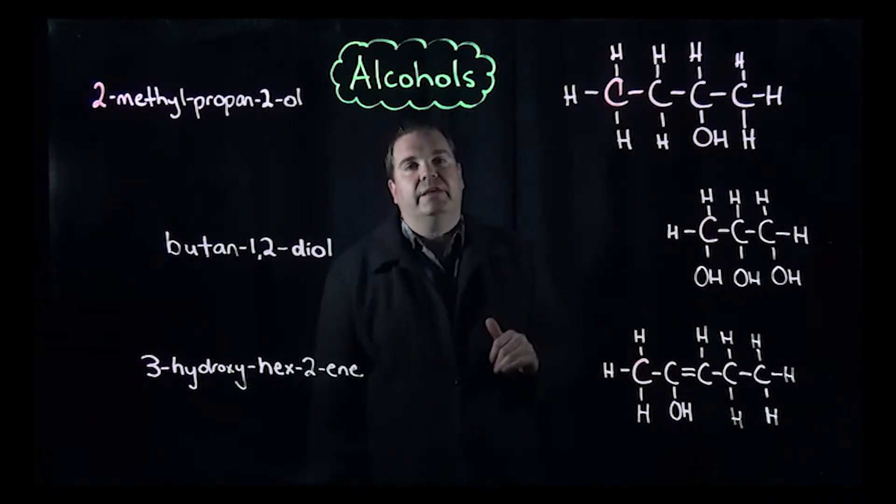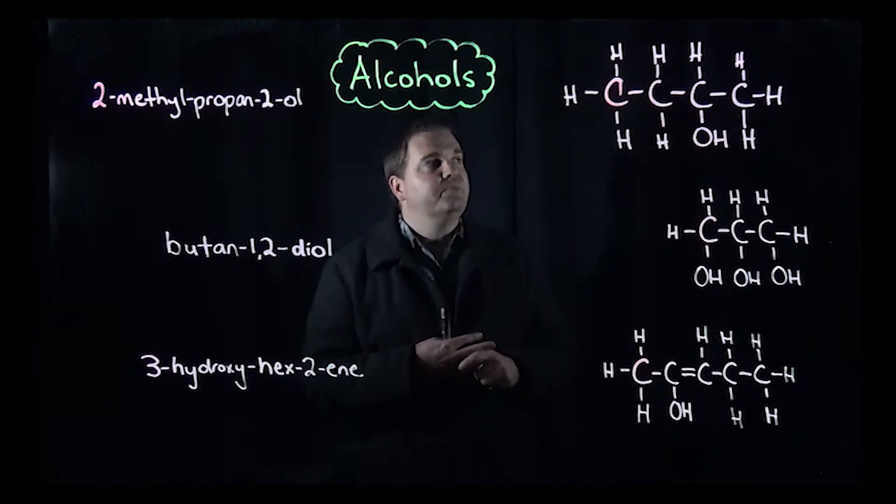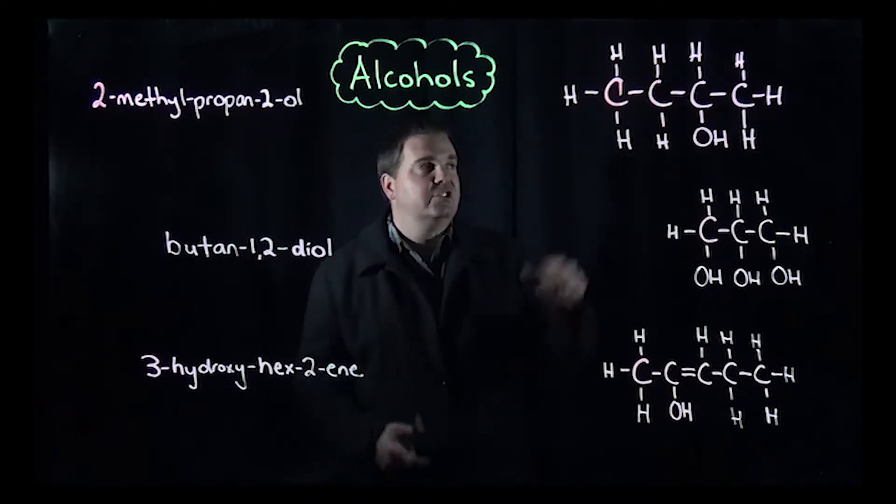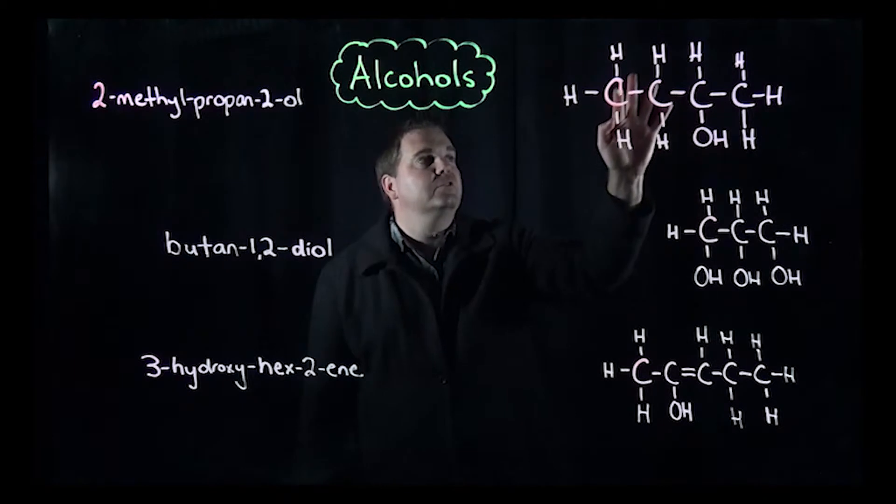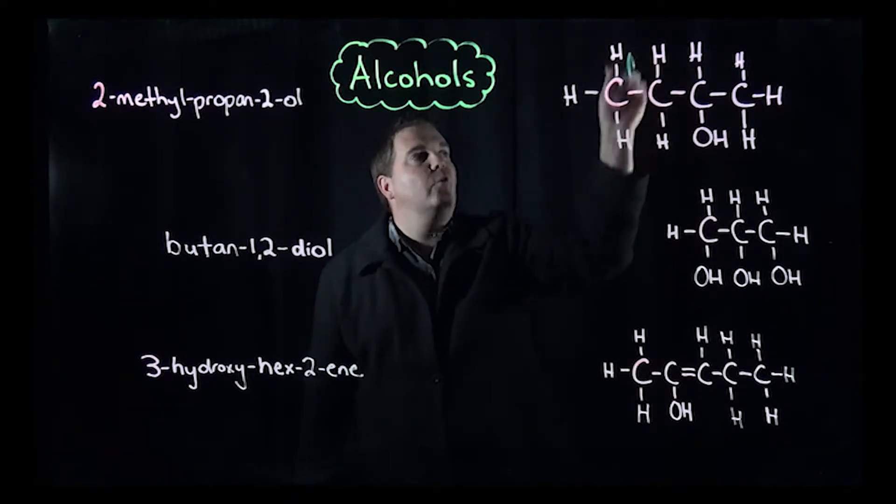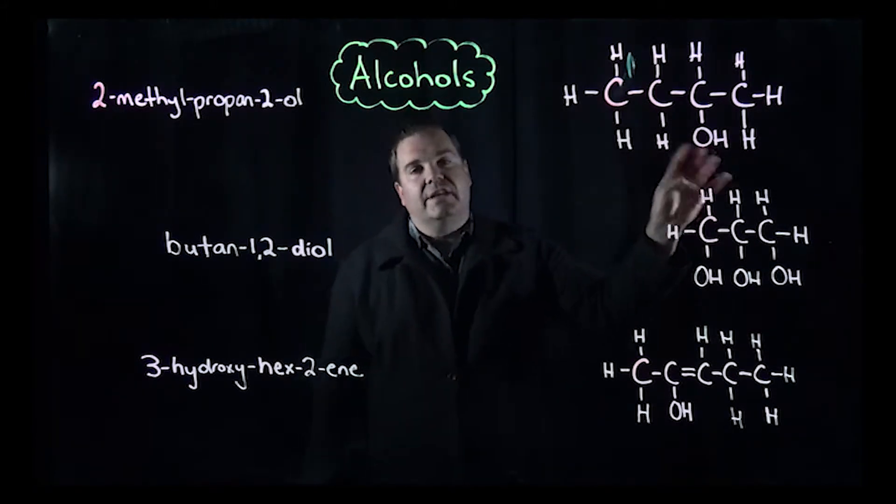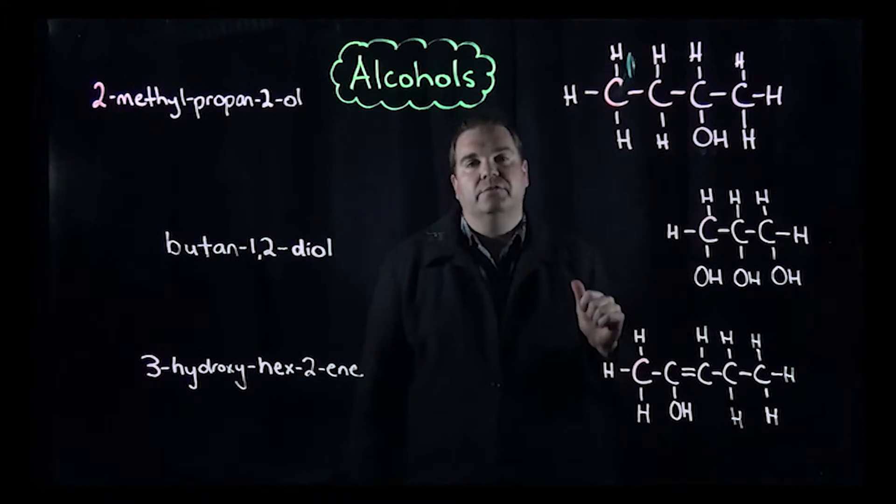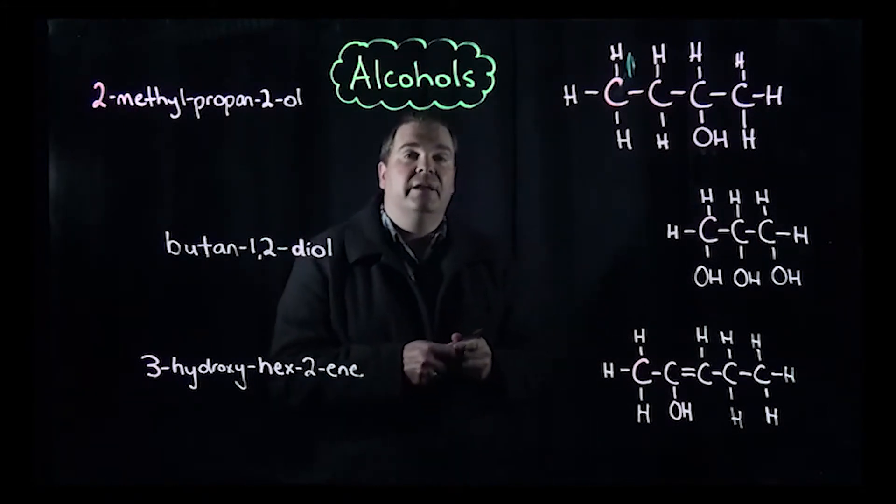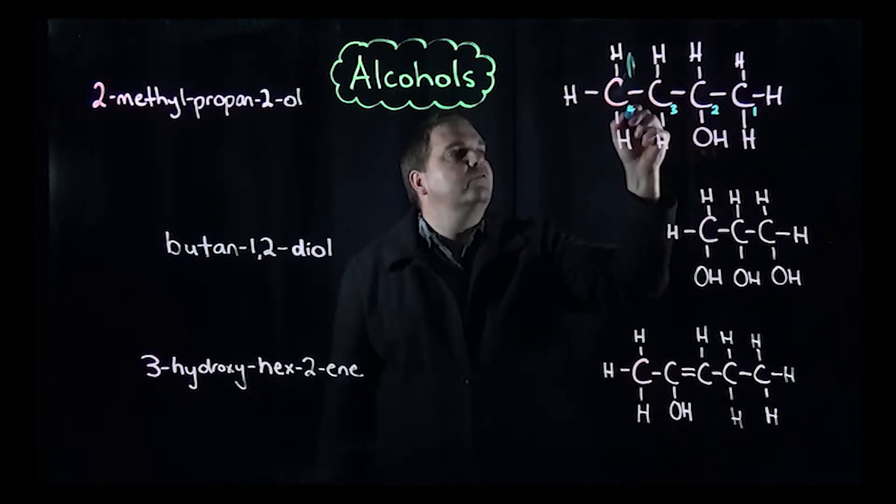Following our outline from the first video and the introduction to organic chemistry, we identify the longest carbon chain, which in this case is four. We've got four carbons in the longest line, an OH alcohol functional group, and nothing else there. So we number the carbon atoms based on the one closest to the functional group: one, two, three, four.